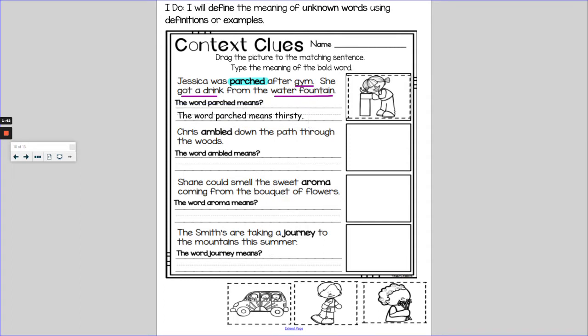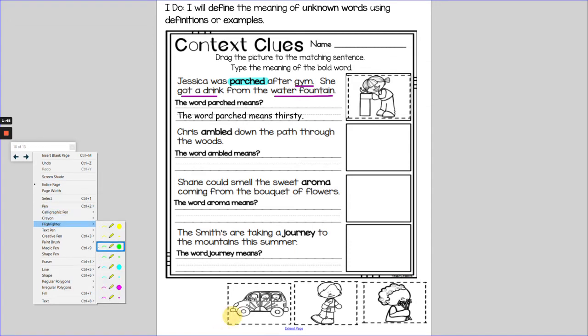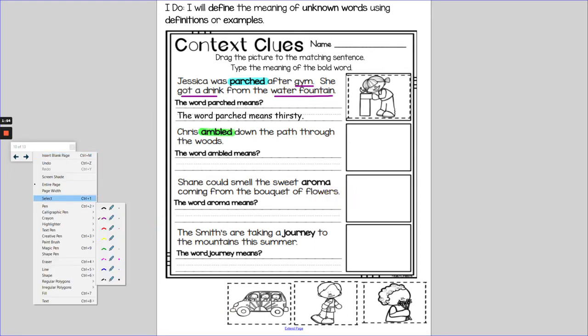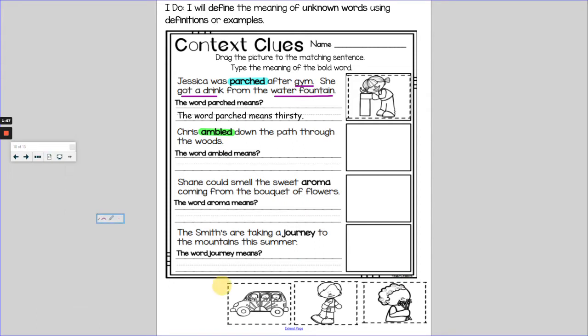Chris ambled down the path through the woods. There's my word I'm highlighting, ambled. Let's use a different color. I'm going down and looking at some of my pictures and seeing if there are any words that go with it. So I see a family in a van, a boy walking, and a person sniffing flowers. I can see back in my sentence, down the path through the woods. This picture, I don't see any woods. I don't see anyone doing anything on a path. This picture, I do see someone walking.